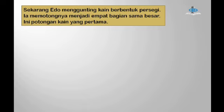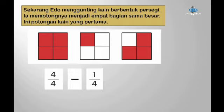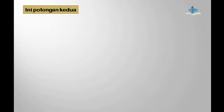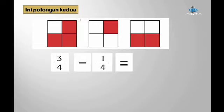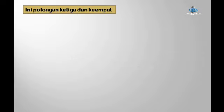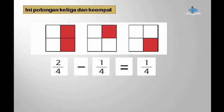Sekarang Edo menggunting kain berbentuk persegi. Ia memotongnya menjadi empat bagian sama besar. Potongan pertama: 4/4 dikurangi 1/4, hasilnya adalah 3/4. Potongan kedua: setelah tersisa 3/4, dikurangkan 1/4, maka hasilnya adalah 2/4. Selanjutnya, untuk potongan ketiga: setelah tersisa 2/4, dikurangkan 1/4, maka hasilnya adalah 1/4.